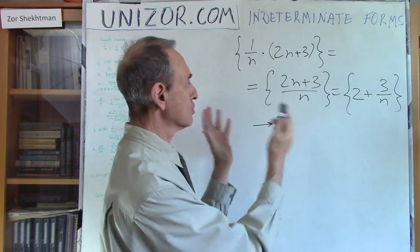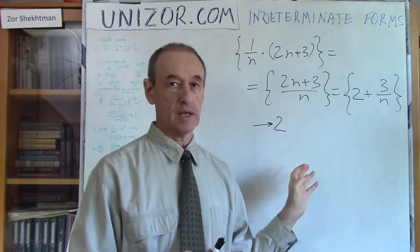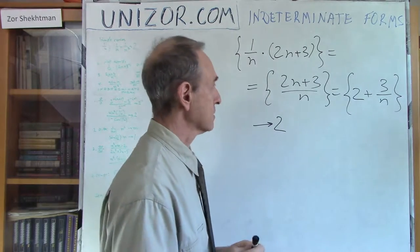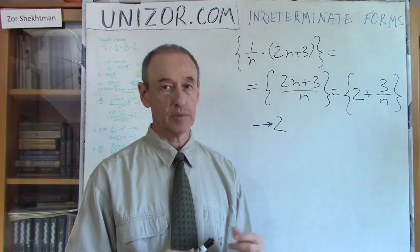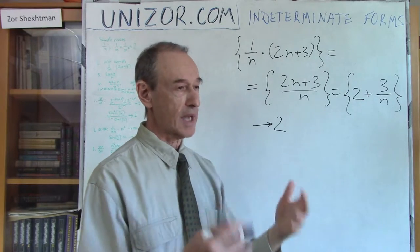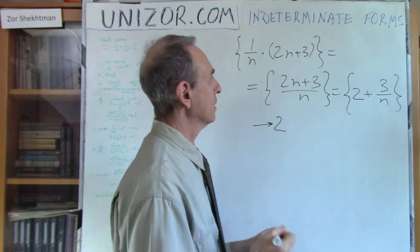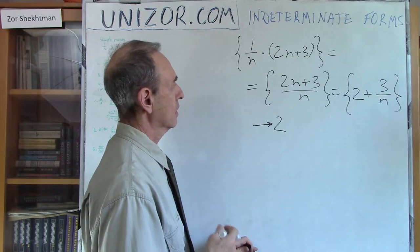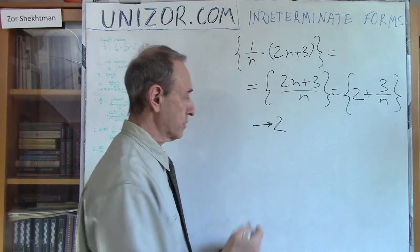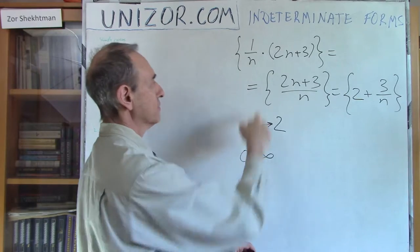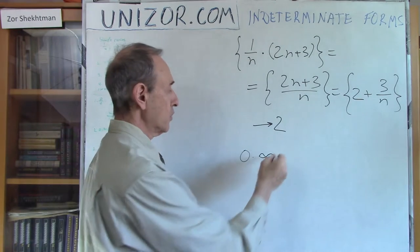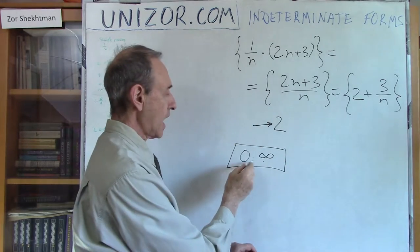Now we have a constant plus infinitesimal. We know that limit of sum is equal to sum of limits. The constant has limit 2, and 3 over n has limit 0 because n is in the denominator. So the result will be 2 — this particular sequence converges to 2. We needed to do some very simple transformation to obtain this. The symbolic label for this class of limits is 0 times infinity, where 0 signifies infinitesimal and infinity signifies the infinitely growing.